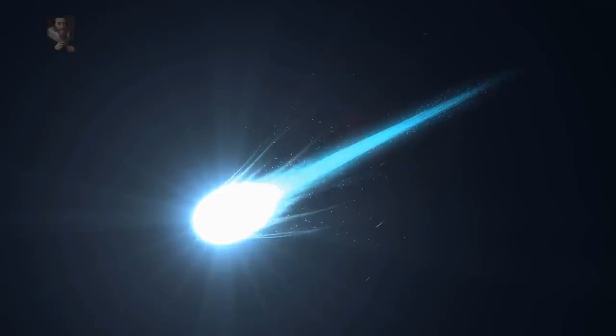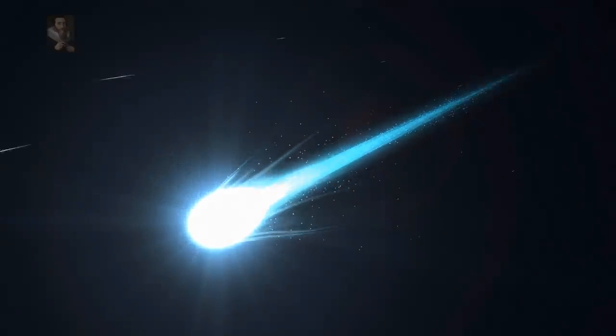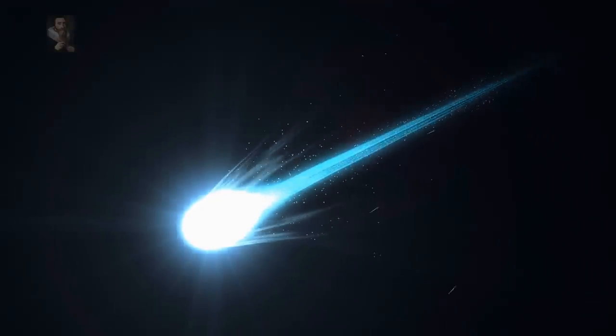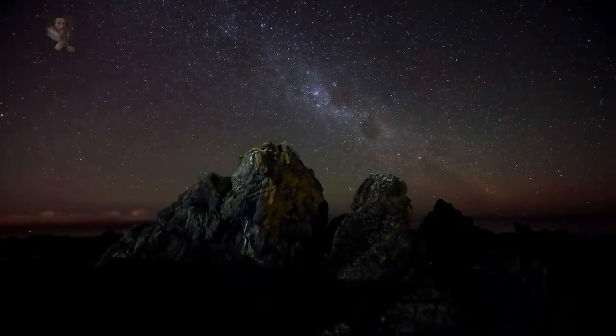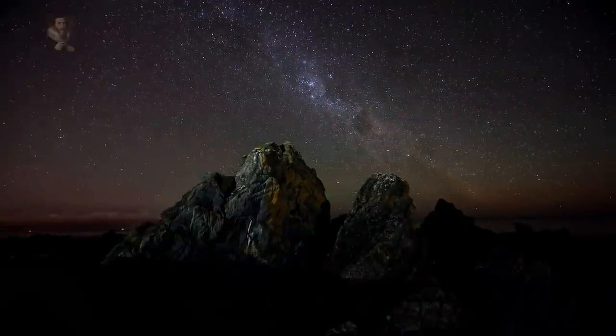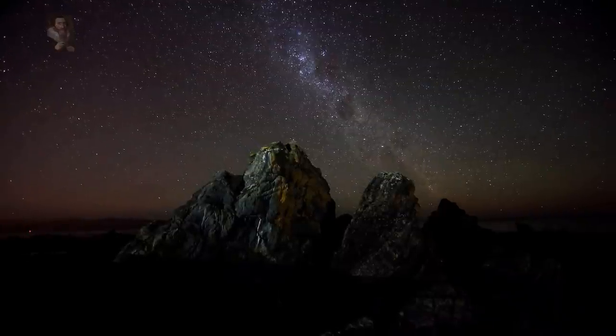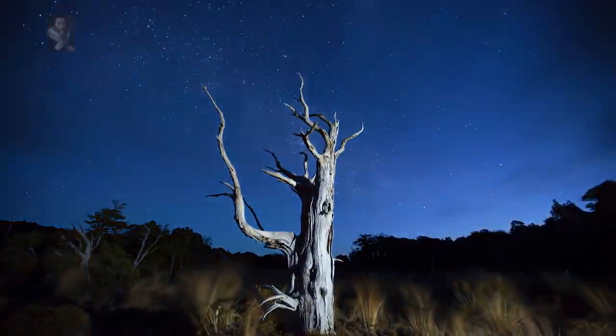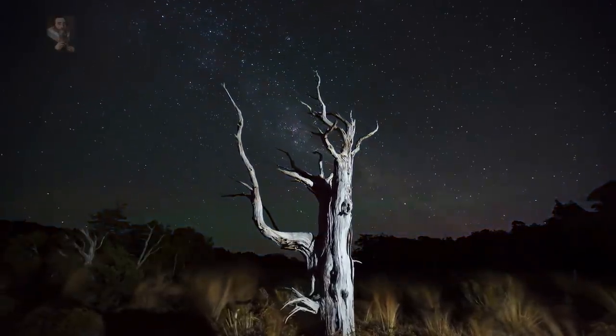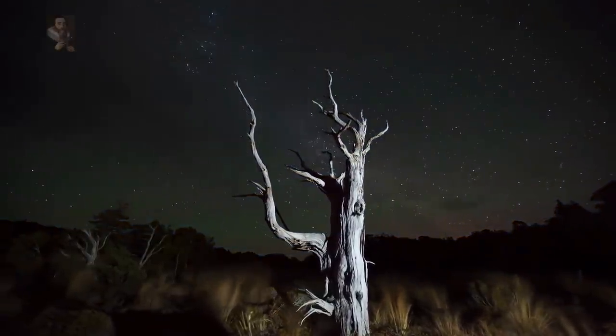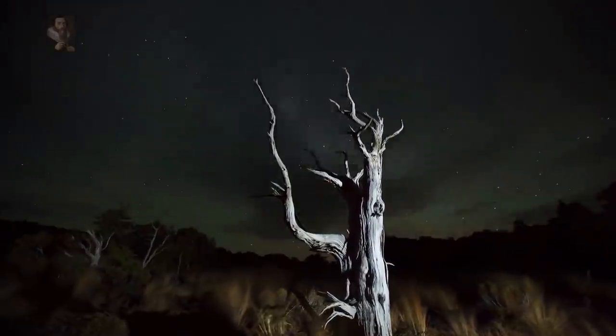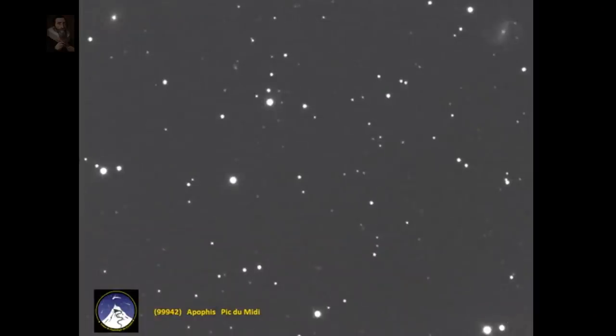NASA said the asteroid Apophis will look like a moving starlight point of light to earthly observers during the 2029 pass. The asteroid will first become visible to the unaided eye in the night sky over the southern hemisphere, flying above earth from the east coast to the west coast of Australia. It will be mid-morning on the east coast of the United States when Apophis is above Australia. It will then cross the Indian Ocean, and by the afternoon in the eastern US, it will have crossed the equator, still moving west above Africa.